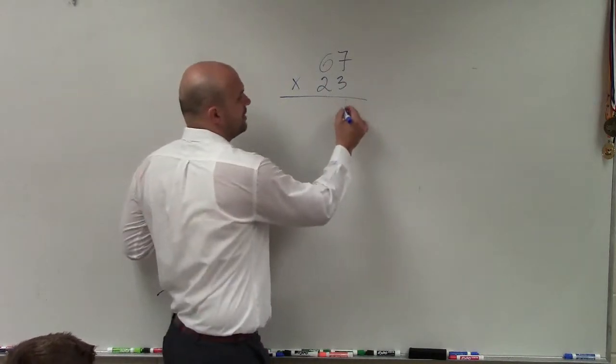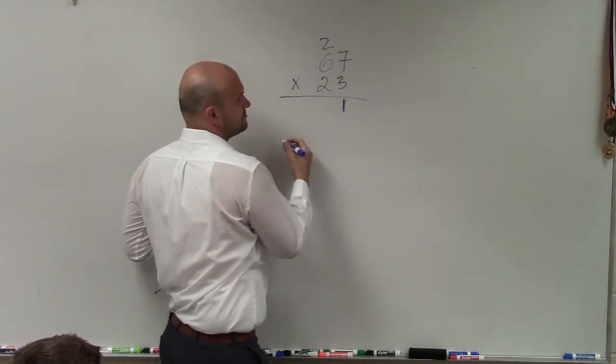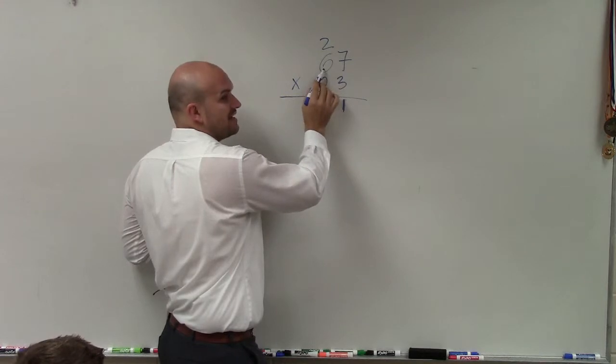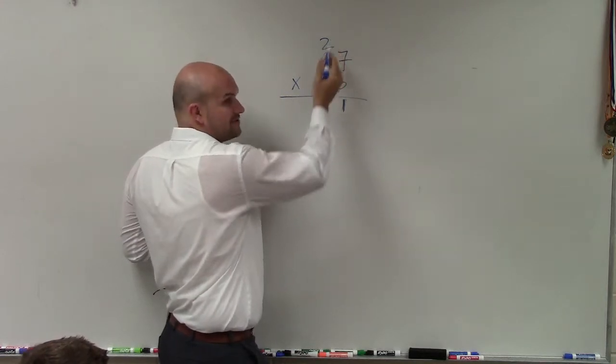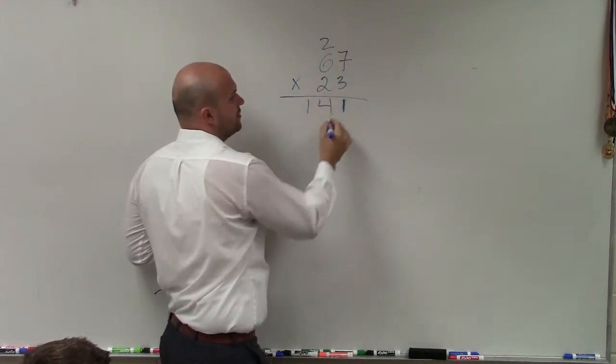So therefore, I'll have 1. And then I'll bring in the 2. 3 times 6 is going to be 12, add the 2, which will be 14.